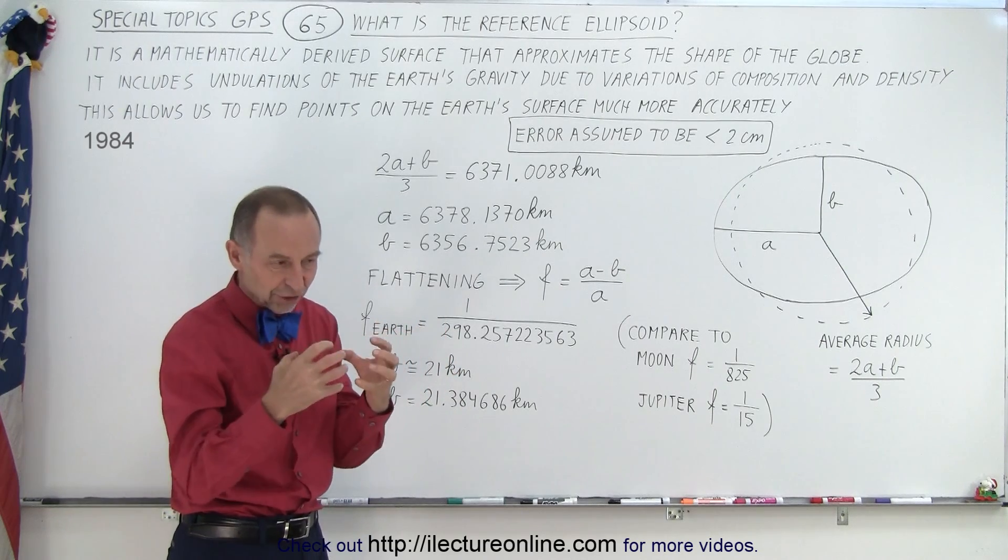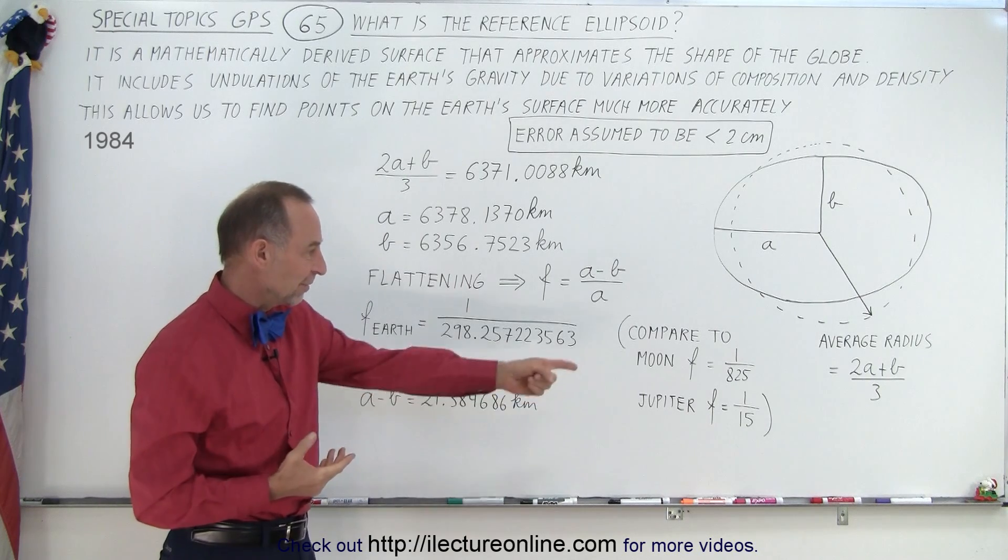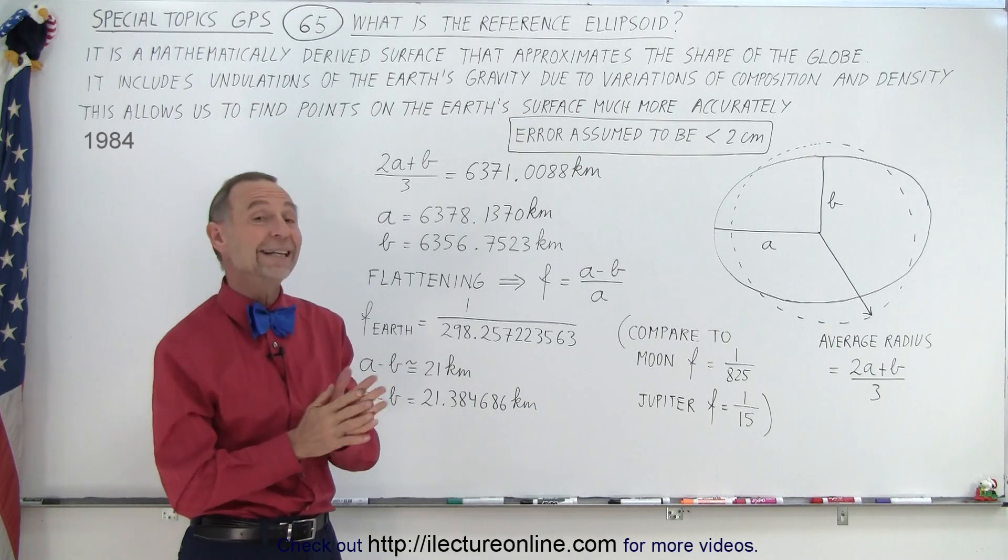Gas planets are not as structurally solid, and so they tend to bulge out more. I think Saturn is even less. Saturn is more like 1 over 10, I believe.